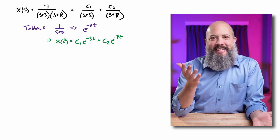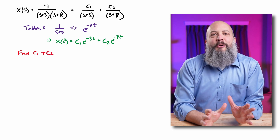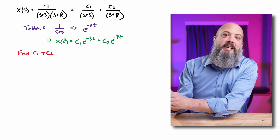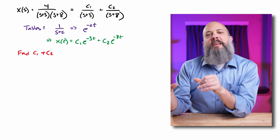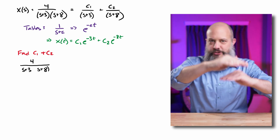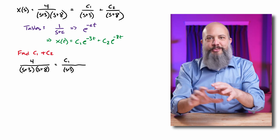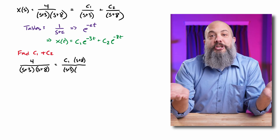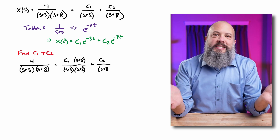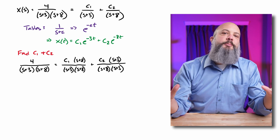So we just need to find c1 and c2. To do the partial fraction decomposition, we take the fractions on the right-hand side — c1 over s plus three — and rebuild them with the same denominator as the left-hand side, which is (s+3)(s+8). For c1 over s+3, I multiply by (s+8)/(s+8), and for c2 I multiply by (s+3)/(s+3), so all three terms — the four, c1, and c2 — all have (s+3)(s+8) in the denominator.